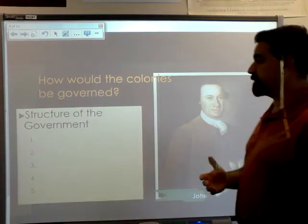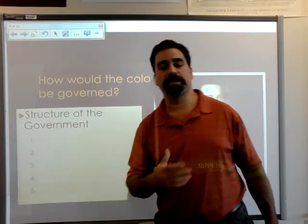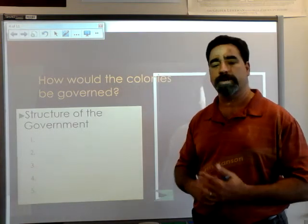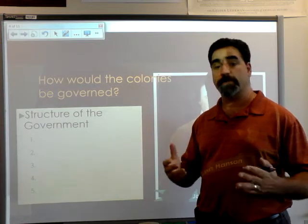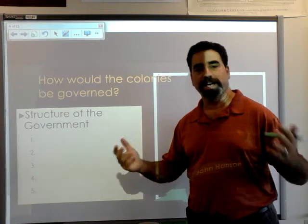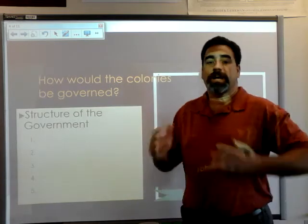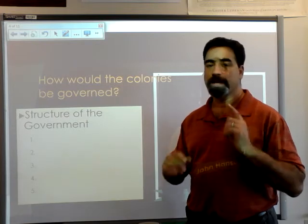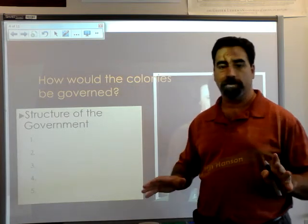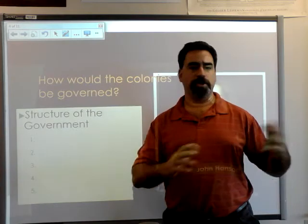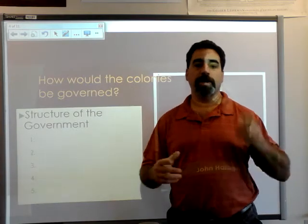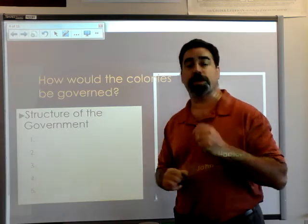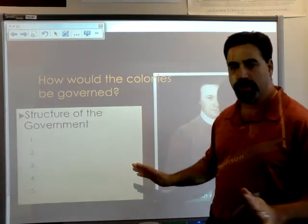Now, how were these colonies going to be governed? According to the Articles of Confederation, each colony was going to have a seat and be represented in a Congress, and each colony — all 13 colonies — would have exactly one vote. It didn't matter how big your colony was, you got one vote. Virginia had a huge population, a lot of territory — one vote. Rhode Island, not so much of a population, itty-bitty territory — one vote. Everybody gets one vote.